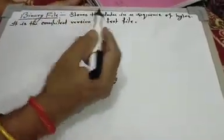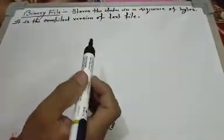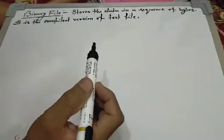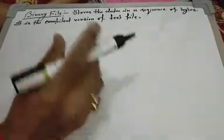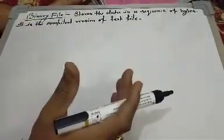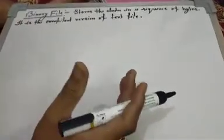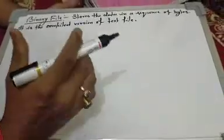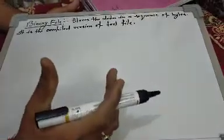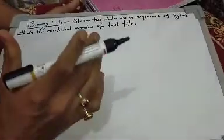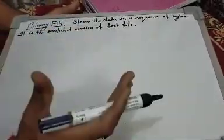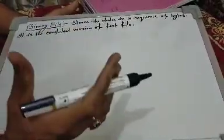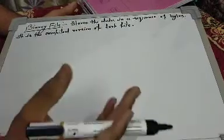A binary file stores data in a sequence of bytes. It is the compiled version of a text file. This binary file stores data in the form in which it is actually stored in the computer.